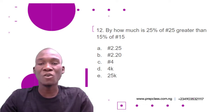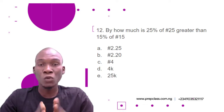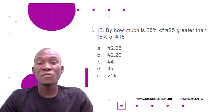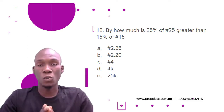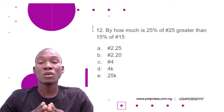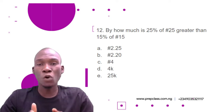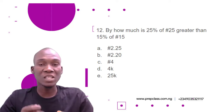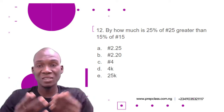Let's move to the next question. Question 12: By how much is 25 percent of 25 naira greater than 15 percent of 15 naira? The options are: A) 2 naira 25 kobo, B) 2 naira 20 kobo, C) 4 naira, D) 4 kobo, E) 25 kobo. To answer this question, we need to find what 25 percent of 25 naira is and also find 15 percent of 15 naira, then we can find the difference.